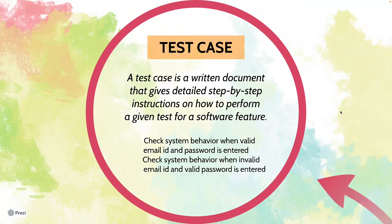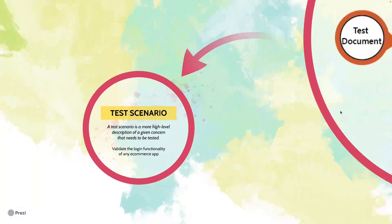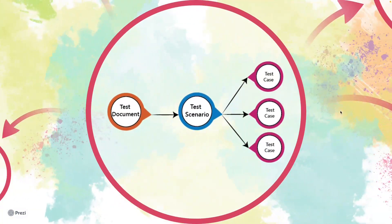Then, when you enter the correct username and incorrect password, are you able to login? You should not be. And then the same for incorrect username with correct password, and then incorrect username with incorrect password — essentially n number of combinations. So validating the complete functionality of the login page is one test scenario, but trying it with different credentials turns out to be different test cases.